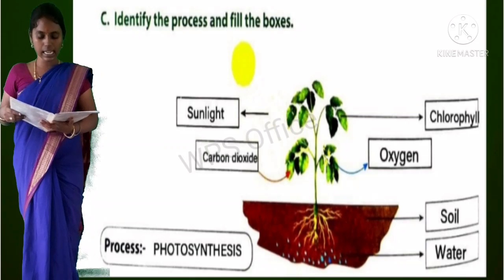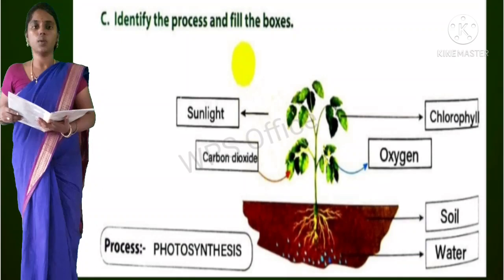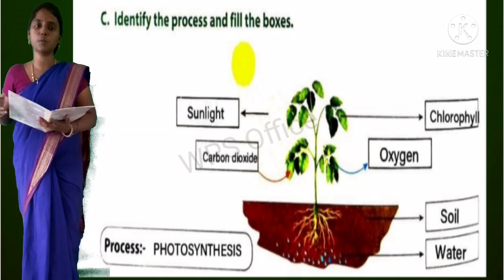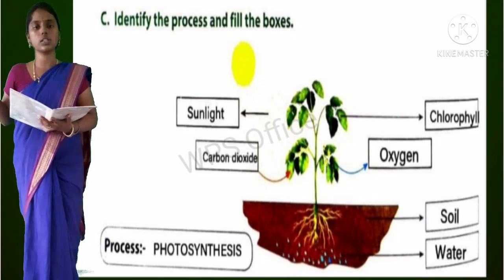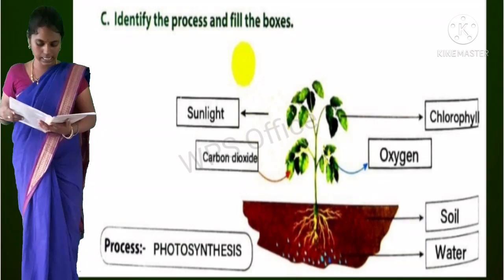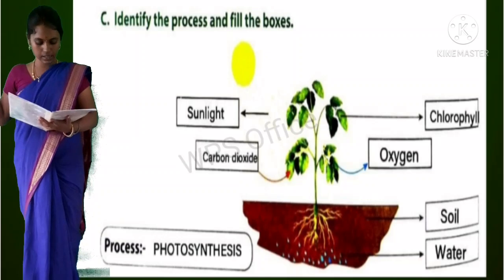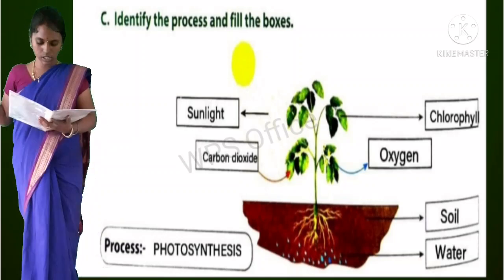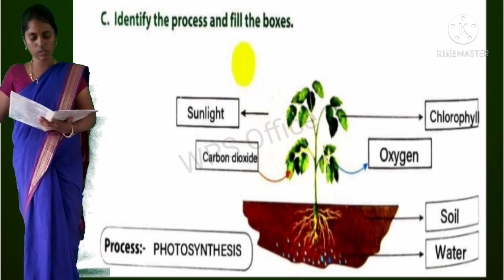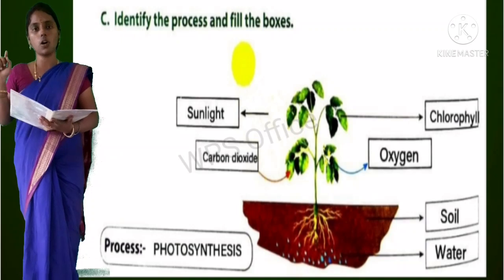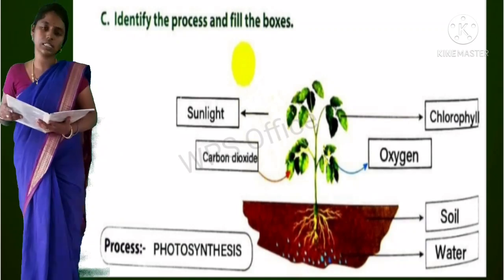Section C: Identify the process and fill the boxes. A picture is given. The process is photosynthesis - plants prepare their own food. You can fill the boxes: sunlight, carbon dioxide, oxygen, chlorophyll, soil, water. In the process box you have to fill photosynthesis.